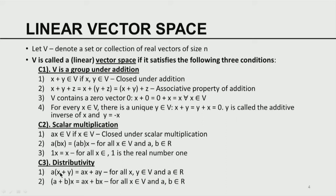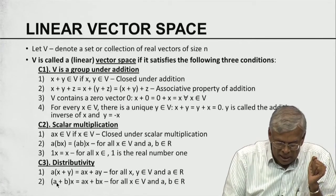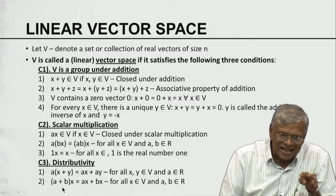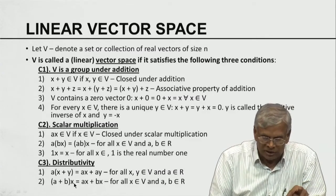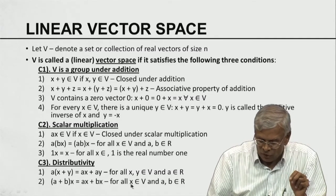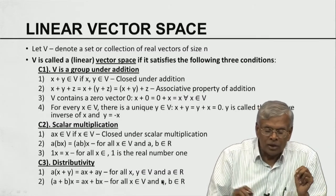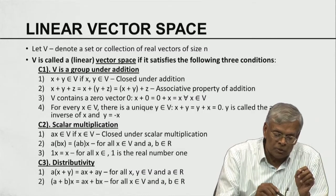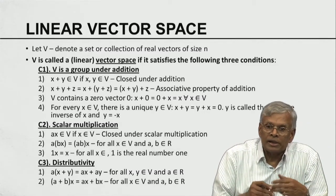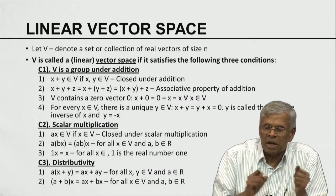The third property is called distributivity. A times (X plus Y) equals AX plus AY for all X and Y — scalar multiplication distributes over addition. Also, (A plus B) times X equals AX plus BX for all X — scalar addition distributes over vector multiplication. Any collection of vectors satisfying these three conditions C1, C2, C3 constitutes a linear space, a vector space, or a linear vector space.